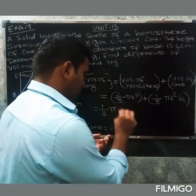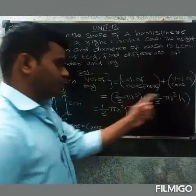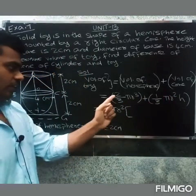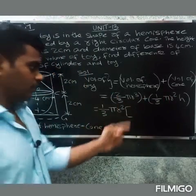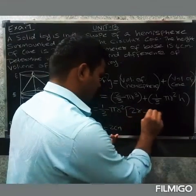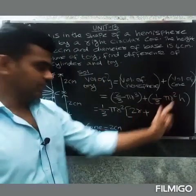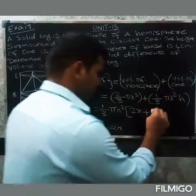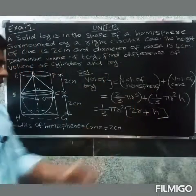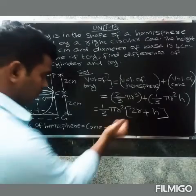Factoring out 1/3 π r² gives: 1/3 π r² into (2r + h), where h is the height of the cone.